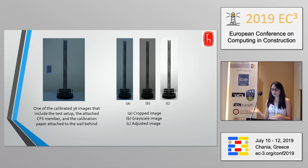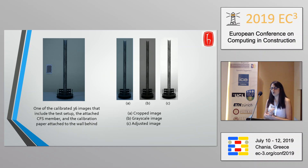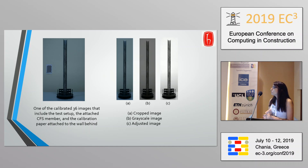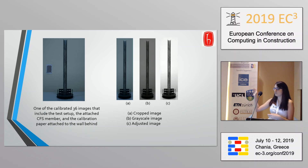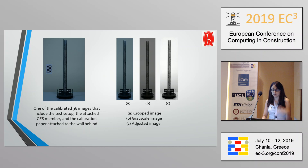On the right hand side you can see: A is the cropped image of the original picture taken, the second is the grayscale version, and the third is the adjusted image which shows the pattern on the cold form steel itself.